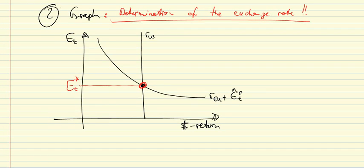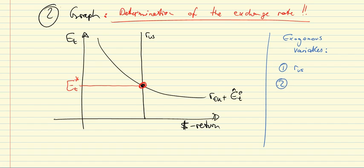This equilibrium is determined in combination with three exogenous variables: the interest rate in the US, determined primarily by the interaction between the Federal Reserve and domestic financial market participants; the same for the ECB in Europe; and third, the expected level of the exchange rate at the end of the period, E_{t+1}.